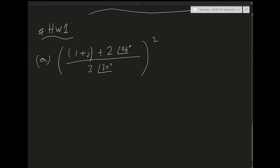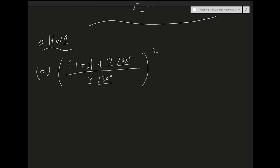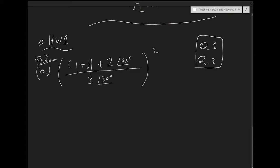Let's solve the rest of the homework problems — homework one problems. I already solved question one and question three, which are about trigonometric identities. Now let me solve question two, which has to do with complex number manipulations. It starts with some problems where you mix and match different complex numbers, adding and multiplying them, requiring transformations to combine them.